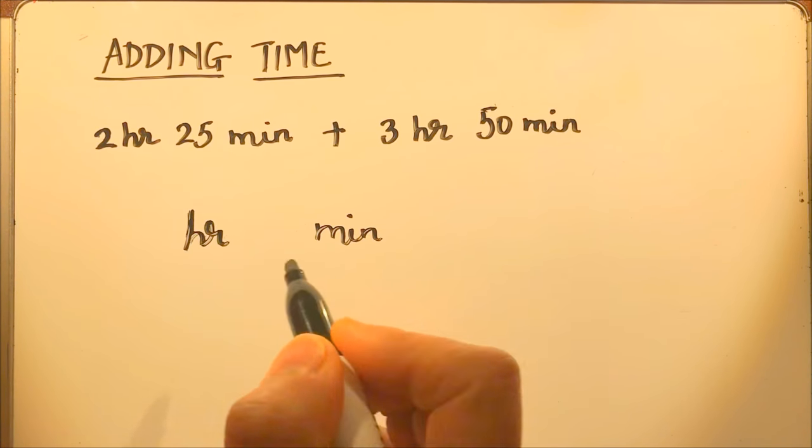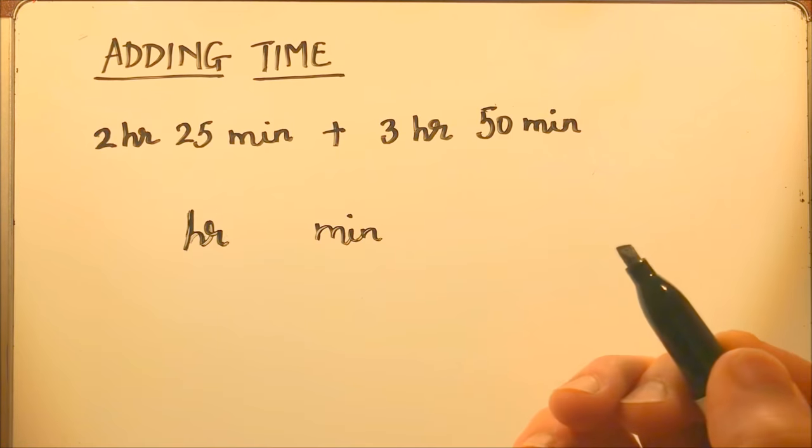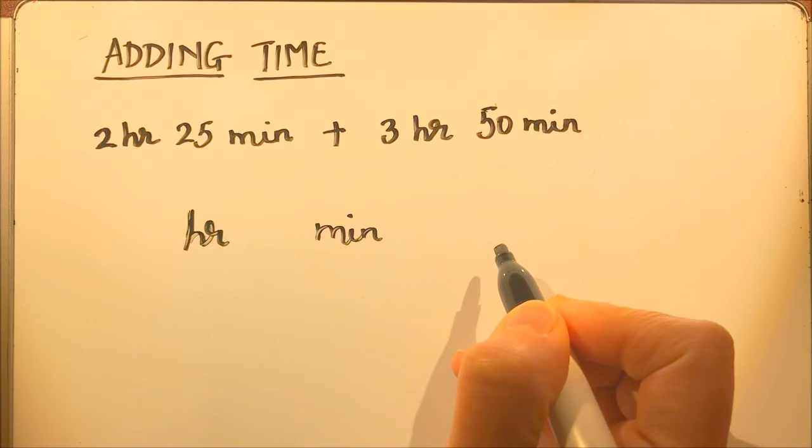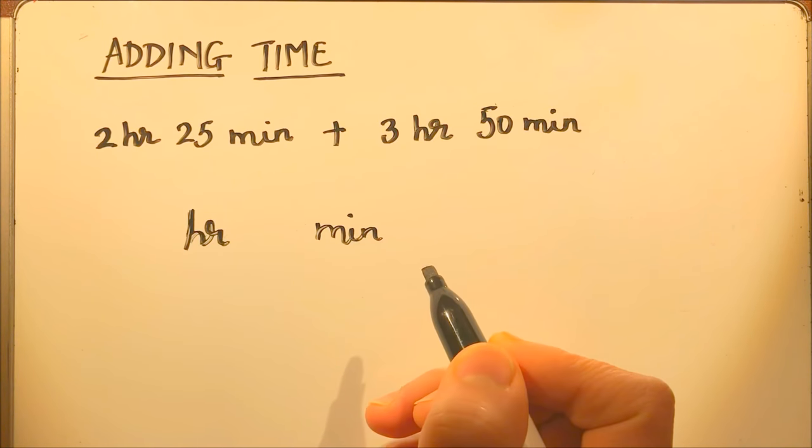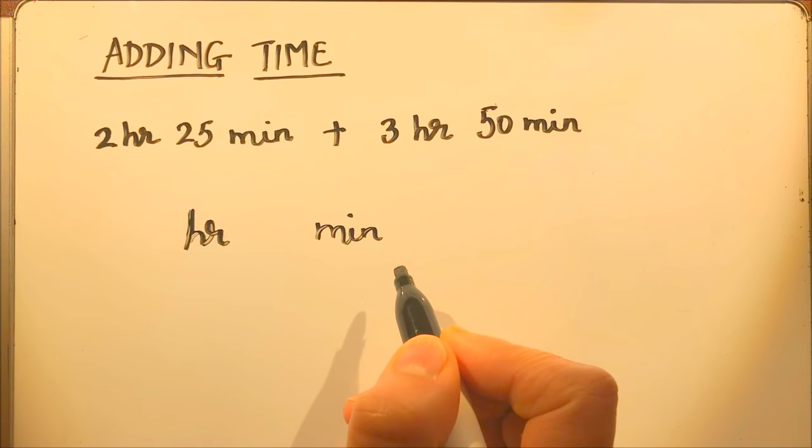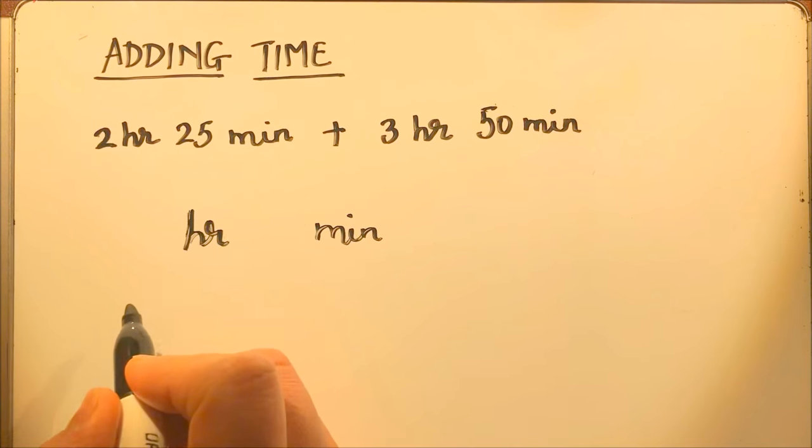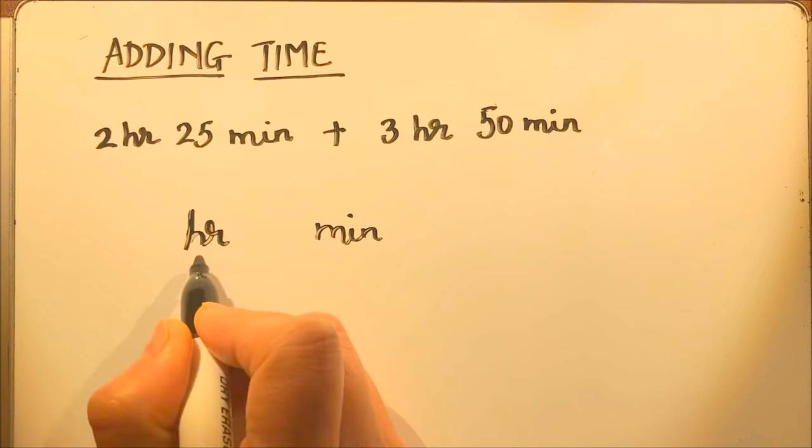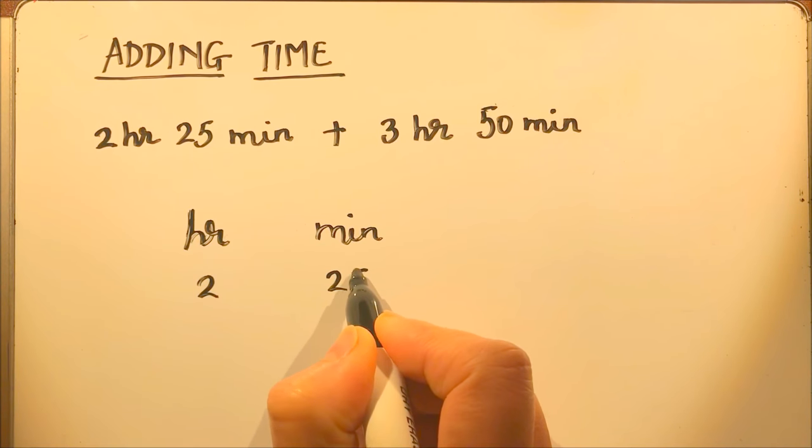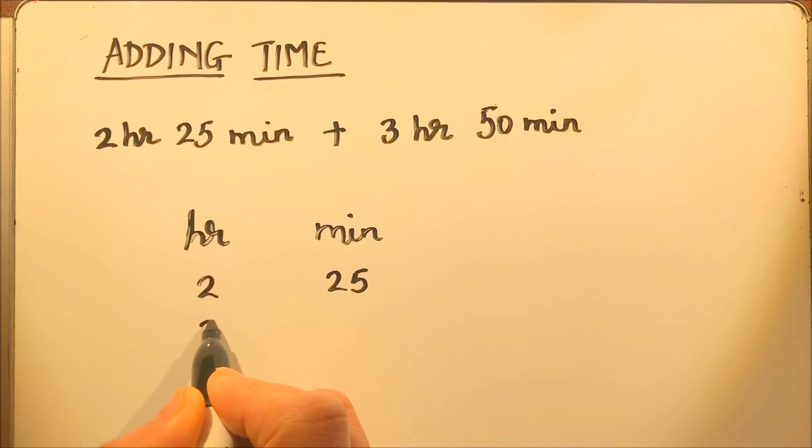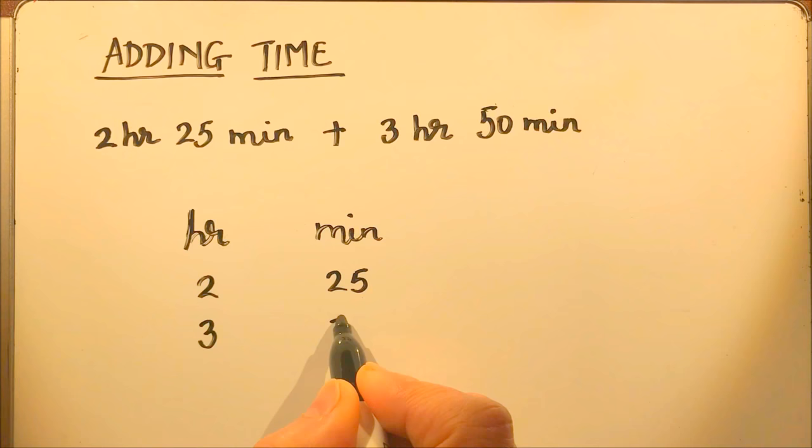If there will be seconds, then we will add seconds too. But now we are only doing hour and minute. In my next video, I will tell you how to add seconds too. So here under hours we will write 2 hours and this is 25 and the other number is 3 hours and 50 minutes.